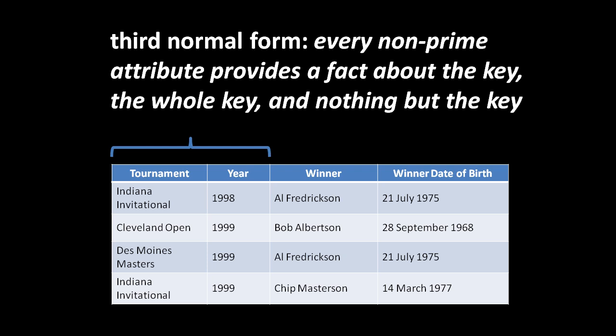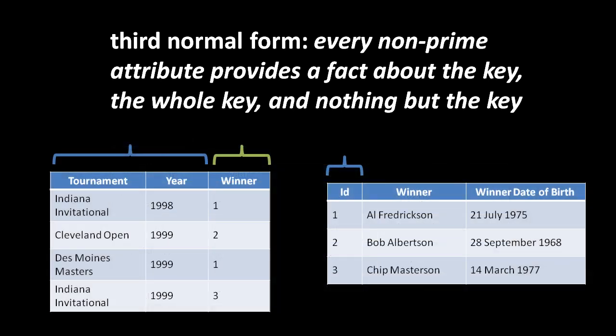The column name 'winner date of birth' tells you something is off — it's the date of birth of the winner, not of the tournament. It's not a fact about the key and nothing but the key; it's really a fact about the winner. This is a transitive dependency: winner date of birth is dependent upon winner, and winner is dependent upon tournament and year. The solution is to split the table into a tournaments table and a winners table, with the tournament table holding a foreign key referencing the winner table's primary key.